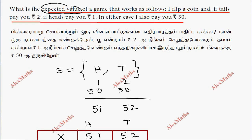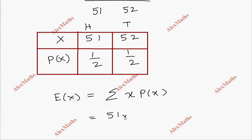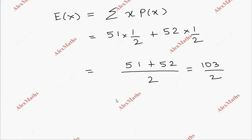E of X, so the E of X formula is sigma X into P of X. So 51 into 1/2 plus 52 into 1/2. Taking the common denominator: 51 plus 52 = 103, divided by 2 = Rs. 51.5.